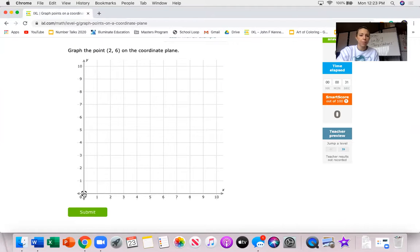I like to start at zero zero and then since my first point is two I go first to two on the X axis. Now I'm not putting a point there because my second value is six so I'm going to go up to six and if I click boom a point will appear.